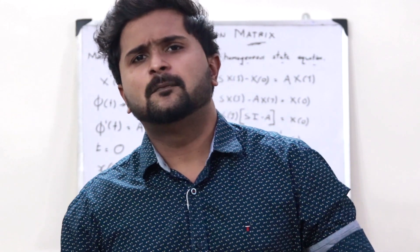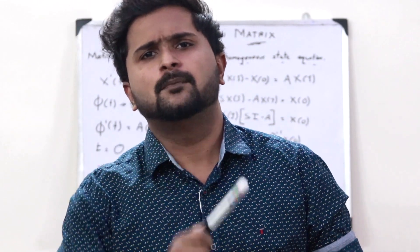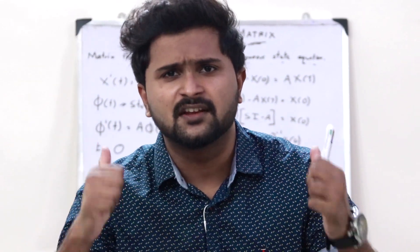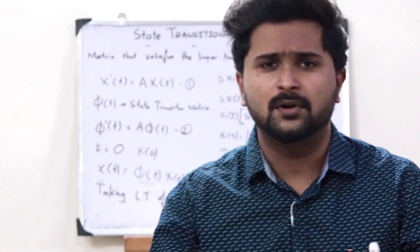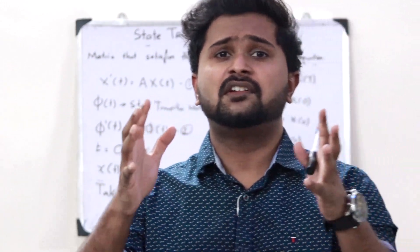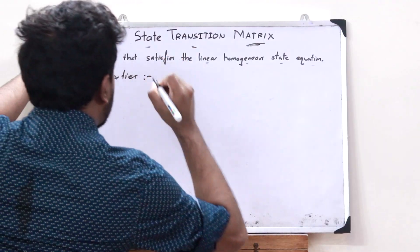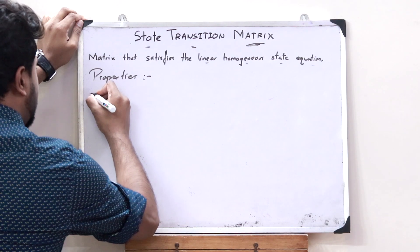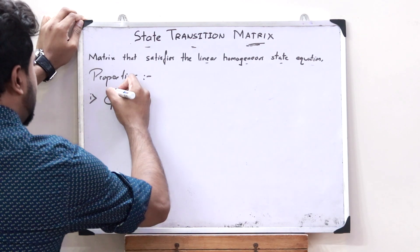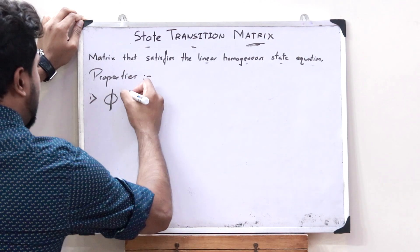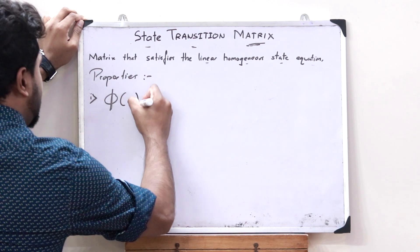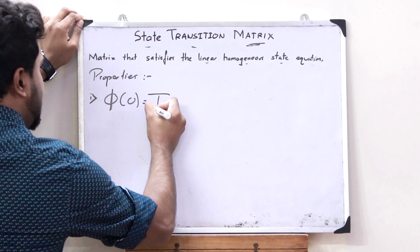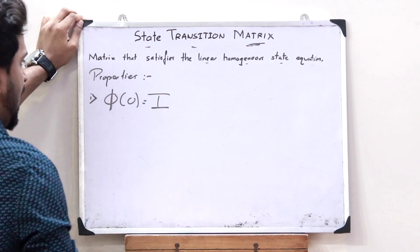This state transition matrix has certain properties. The first property of a state transition matrix is that phi(0) is nothing but the identity matrix I.